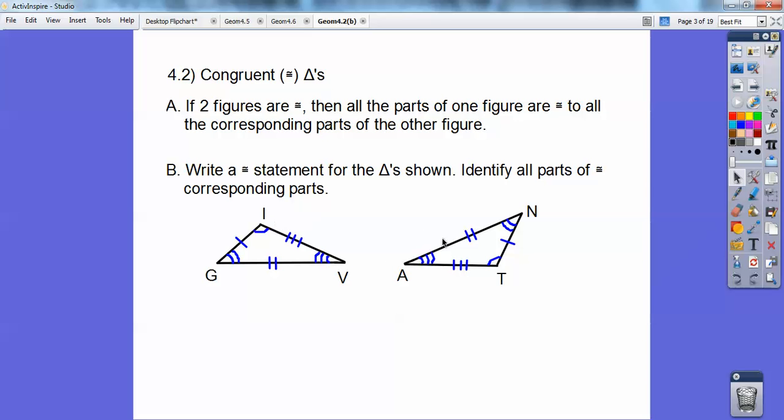Segment GI is congruent to segment, and I went from the two strikes to the one strike, so I would write it as segment NT. And then so on. So what are all the congruent parts? Just make sure you're putting them in the appropriate order, and that's what you're looking for.